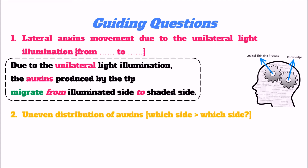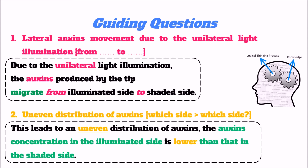Question 2: After talking about the lateral movement of auxin from the illuminated side to the shaded side, we need to discuss the uneven distribution of auxin. Simply saying there is uneven distribution is not specific enough. We need to specify that there is a higher concentration of auxin on the shaded side than on the illuminated side. So we state: this leads to an uneven distribution of auxin, with the auxin concentration on the illuminated side being lower than that on the shaded side.